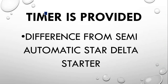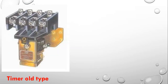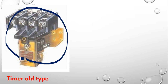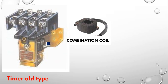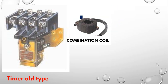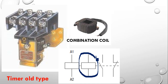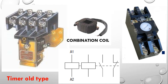The main difference between semi-automatic and automatic is the timer. There are two types: an old-type timer and a new electronic timer. In the old timer type, the no-voltage coil of the contactor is replaced with a combination coil. Inside the combination coil there is a normal no-voltage coil for standard operation, plus an additional coil. Attached to the combination coil are NC and NO contacts — this assembly forms the timer.